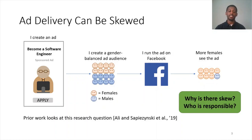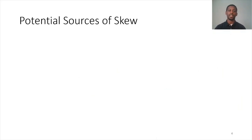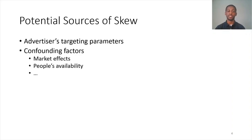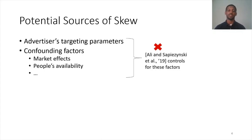Now the question is: why is there such skew and who is responsible for this outcome? Prior work by Ali and Sapiezynski et al. precisely looked at this research question and studied jobs that are stereotypically associated with certain demographics, and studied why they see a skewed ad delivery. In that prior work, they look at different potential sources of skew. The first one is the advertiser's targeting parameters — they control for this by targeting a gender-balanced audience. Second, they look at confounding factors such as market effects, for example, other ads bidding higher for men versus women, or people's availability during the time that ads are running.